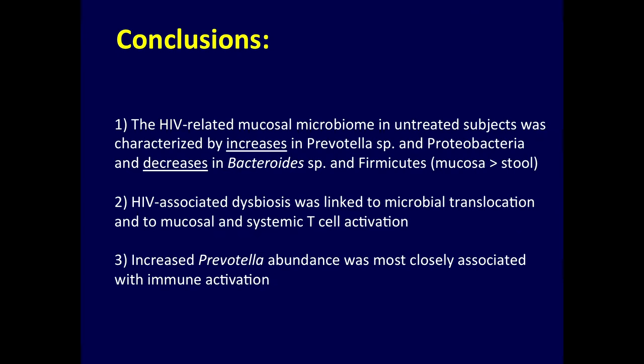What we've shown in these initial studies is that the mucosal microbiome in untreated subjects was characterized by increases in Prevotella species and proteobacteria, and decreases in Bacteroides and Firmicutes. We found more significant differences in mucosa — the actual change in bacteria was greater in mucosa than in stool. This raises the question about the kinds of sampling one does in various studies. HIV-associated dysbiosis was also linked to microbial translocation and mucosal and systemic T cell activation, with increased Prevotella abundance most closely associated.